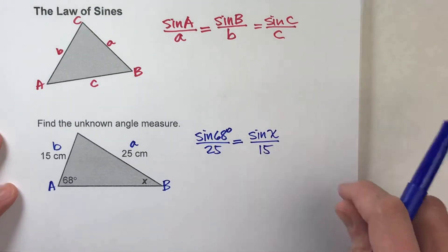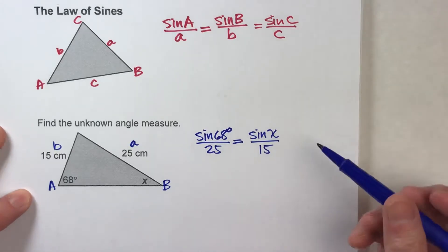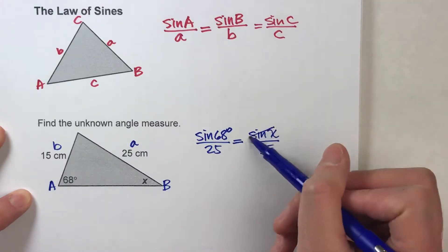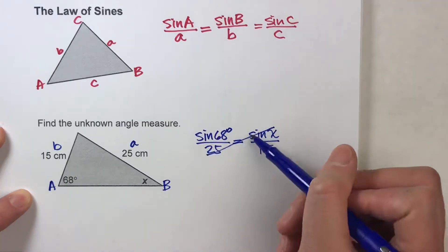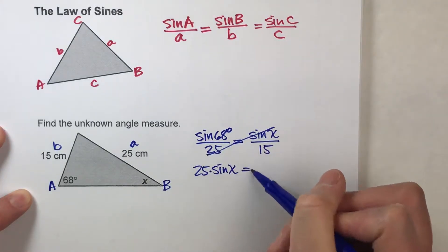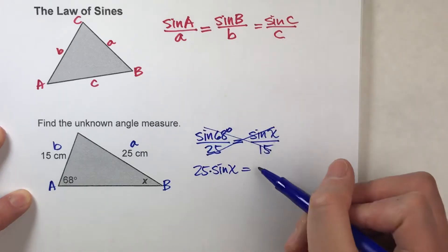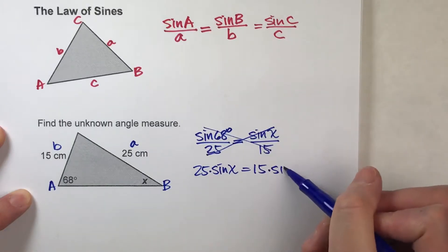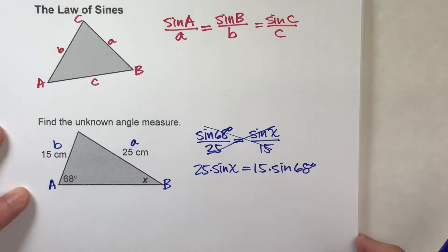So, now we've got an equation that we can actually solve. So let's do that. We've got a proportion, so let's do our cross products. 25 times the sine of x. That's going to equal 15 times the sine of 68.